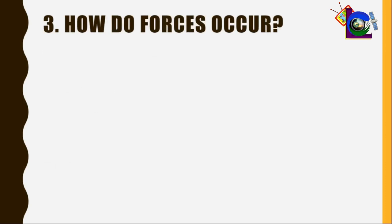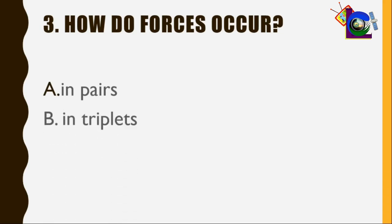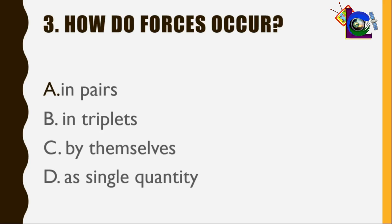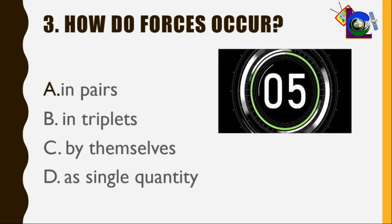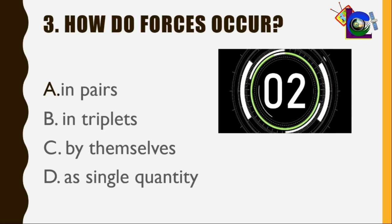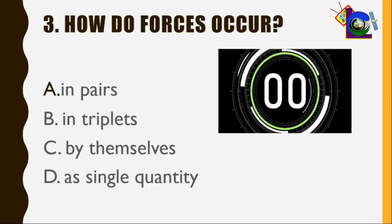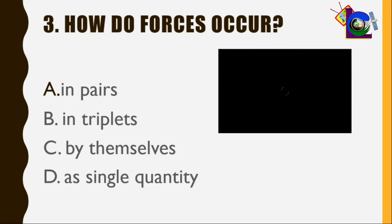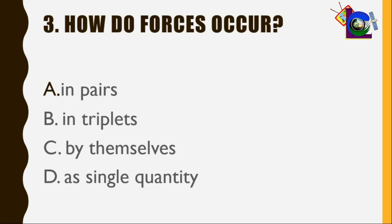Number 3. How do forces occur? A. In pairs. B. In triplets. C. By themselves. D. A single quantity. Time is up. The correct answer is A — in pairs.